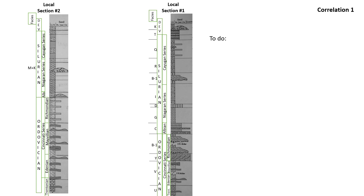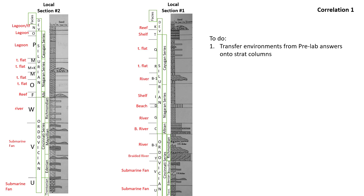You're going to open up that assignment. There are three correlations — this is correlation one — and the first thing you're going to do is go through and transfer the environments you identified with each letter, writing right next to each one what the environment of deposition was. For example, letter U was a submarine fan, letter V was a submarine fan, and layer Y was a braided river.